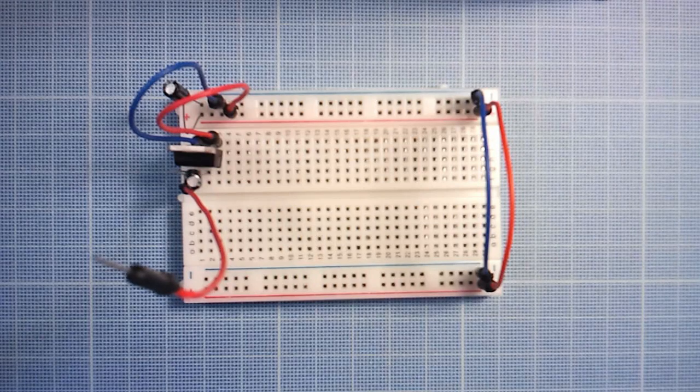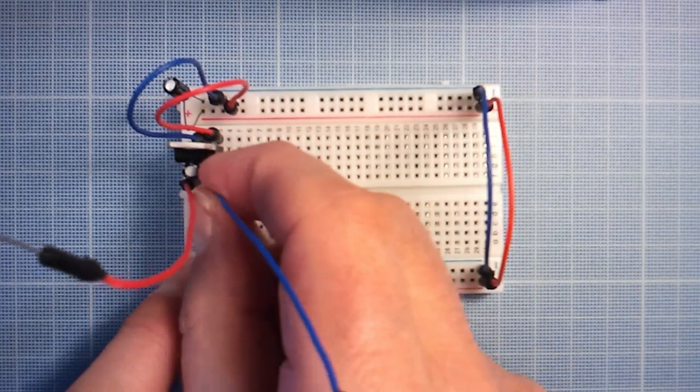Connect jumper wires to the first and the second lead of your voltage regulator. When we finish this project we will connect these jumper wires to a power supply or a battery.